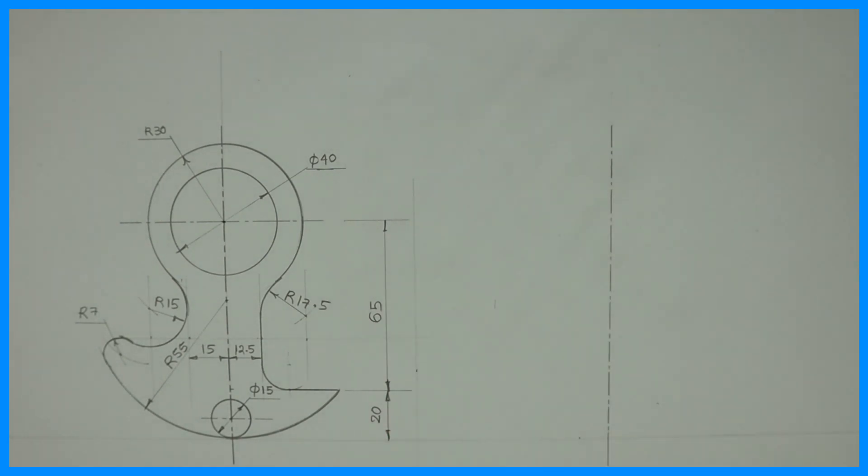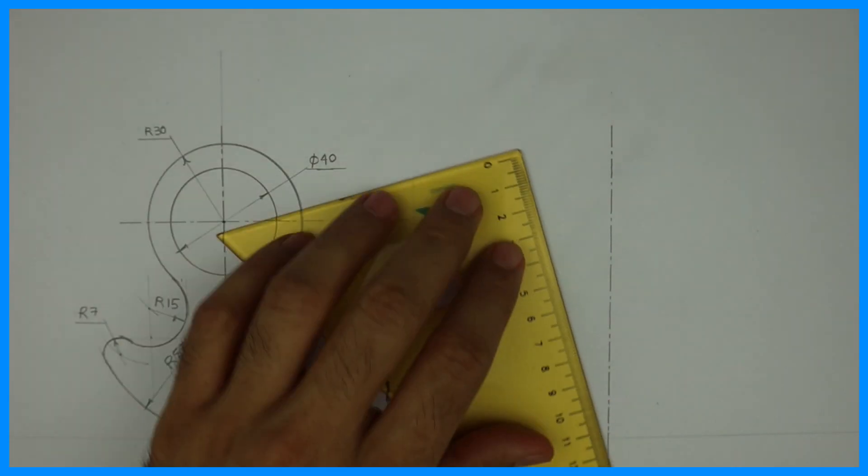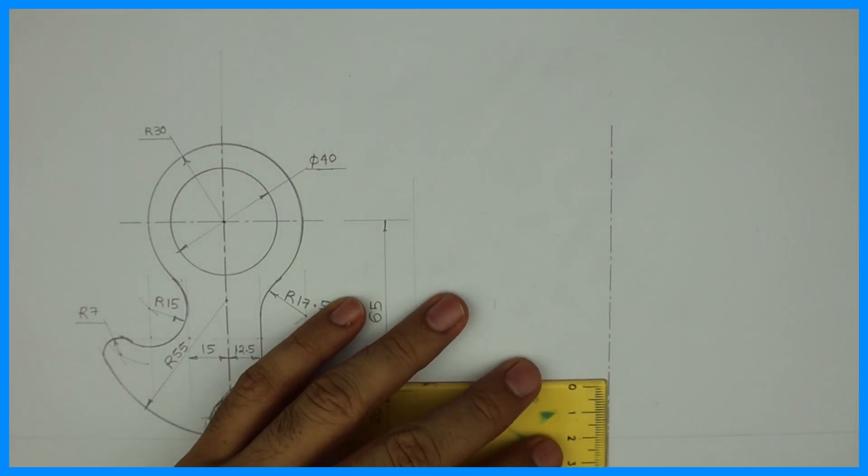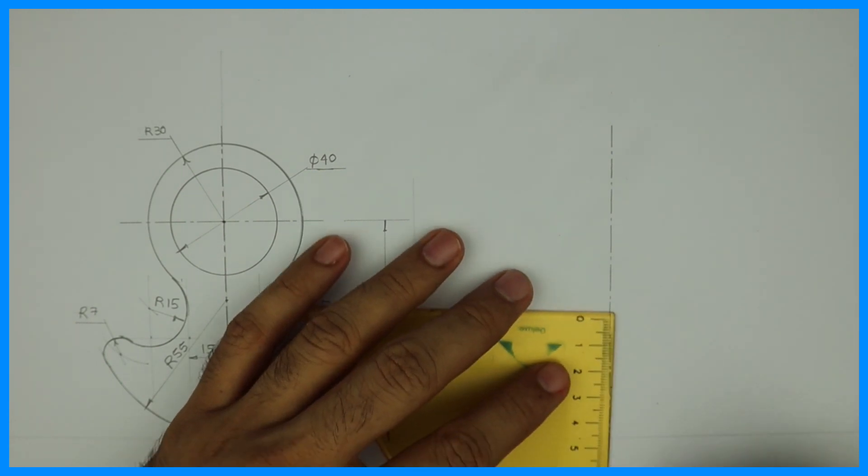After that 20 plus 65 equals 85. So from the bottom we will go up by 85. We will mark 20 and then we will mark 65.